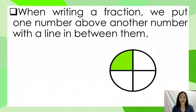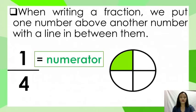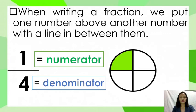When writing a fraction, we put one number above another number with a line in between them. The top number, or numerator, is the shaded part. The bottom number, or denominator, is the part where the whole is being divided.